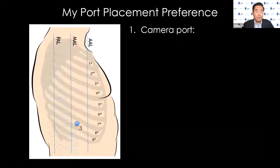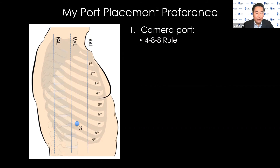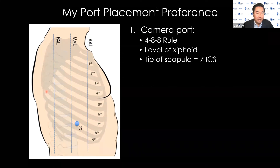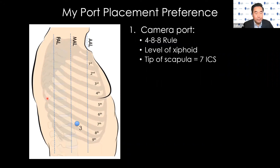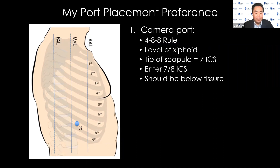In terms of how I place my ports: first, I put the camera port in the eighth intercostal space. For an upper lobe, I place the camera in the seventh intercostal space because I use a zero-degree camera and like to look right over the top of the hilum and dissect down on the pulmonary artery. I determine the position using the 4-8-8 rule. A useful trick if it's hard to count intercostal spaces: identify the level of the xiphoid and draw a horizontal line — that's approximately the eighth intercostal space. The tip of the scapula can also mark the seventh intercostal space. Once I enter, I confirm I'm in the chest, below the fissure, then begin insufflating CO2 at eight millimeters of mercury pressure.